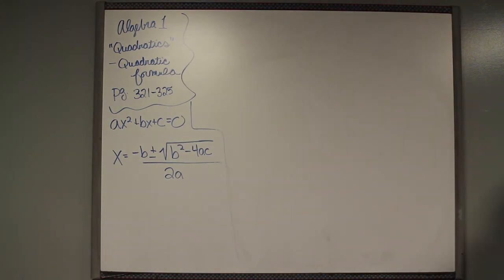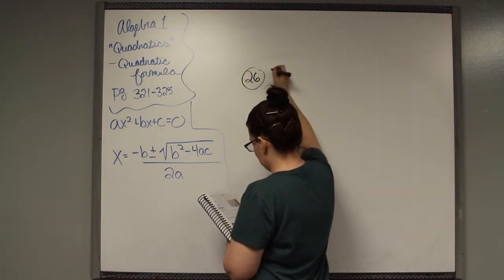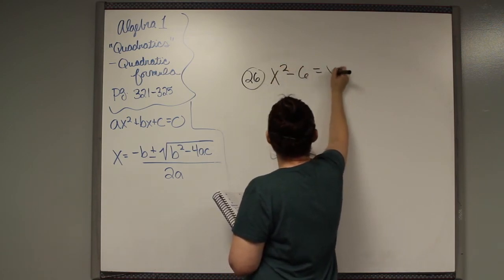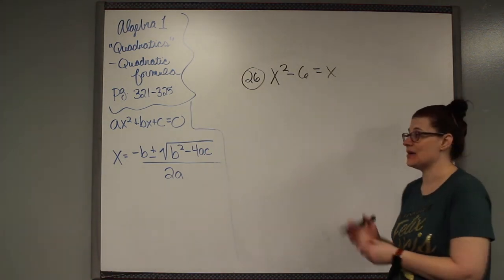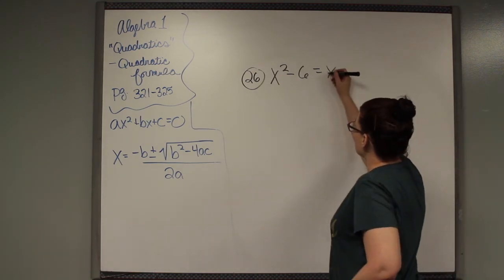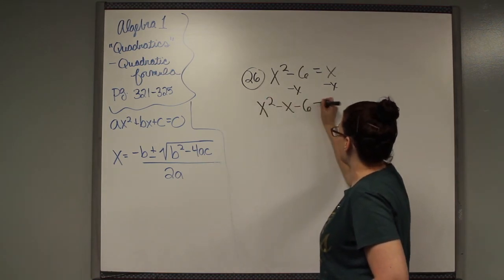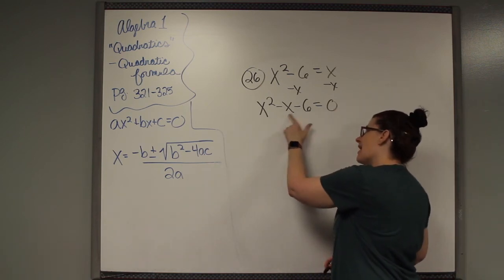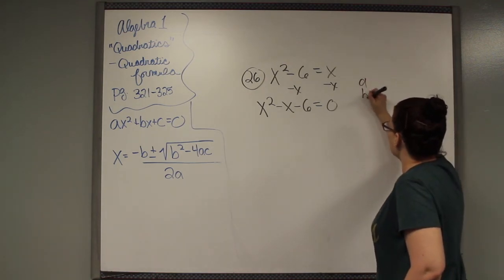Let's look at 26. 26 is x squared minus 6 equals x. So I picked this one because it's not in order. The x is not where it needs to be. Everything needs to be on one side. So it's a positive x, so I need to subtract x. That would give me x squared minus x minus 6 equals 0. It has to be the squared term, then the x, then the number. They cannot be out of order.